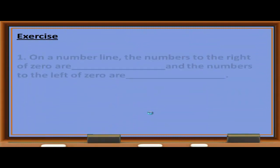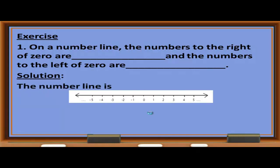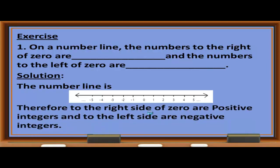Exercise 1: On a number line, the numbers to the left of 0 are negative integers, and the numbers to the right of 0 are positive integers.